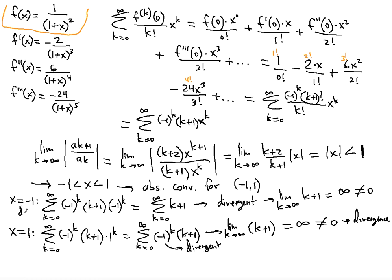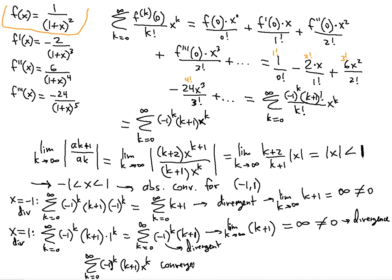We showed divergence at both endpoints. So the final conclusion: the series with general term negative 1 to the k times k plus 1 times x to the k converges on the open interval from negative 1 to 1, with divergence at the endpoints and outside the interval. Thank you so much for watching, and I'll see you in the next video.